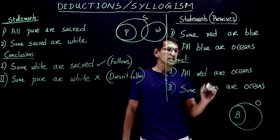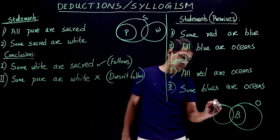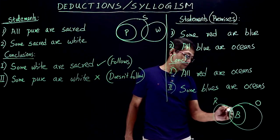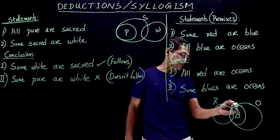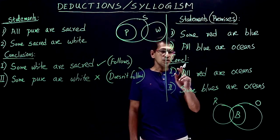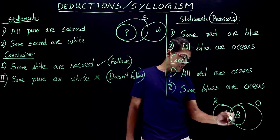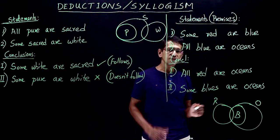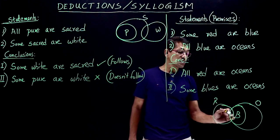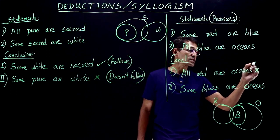Since blue intersects with red, and blue is already inside oceans, oceans must also be intersecting with red. Now for conclusion 1: all red are oceans. Red and oceans do intersect, but we cannot say all red are oceans — only some red are oceans. So conclusion 1 is invalid for the basic diagram; it doesn't follow.